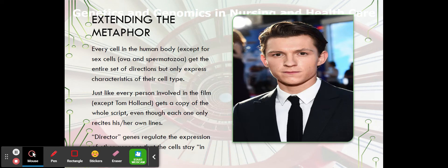Extending the metaphor. Every cell in the human body, except for sex cells, which are your ova and sperm, get the entire set of directions. They get all of the DNA, all 46 of those chromosomes. But they only express characteristics of their cell type. Once that cell is cast in a role, once it becomes a skin cell, a liver cell, a nephron, a neuron, it is only going to behave that way unless we manipulate it in a laboratory.